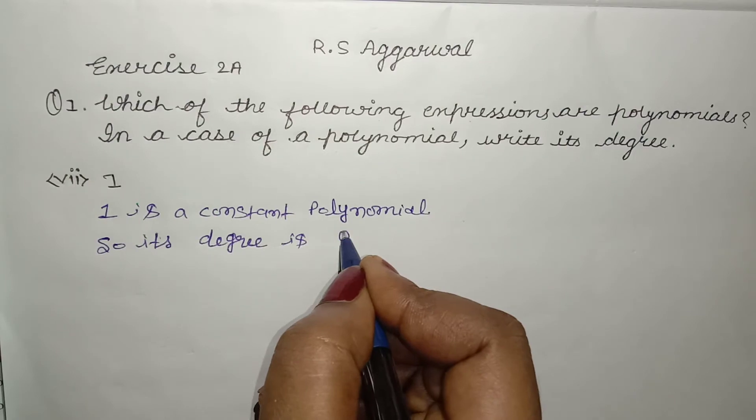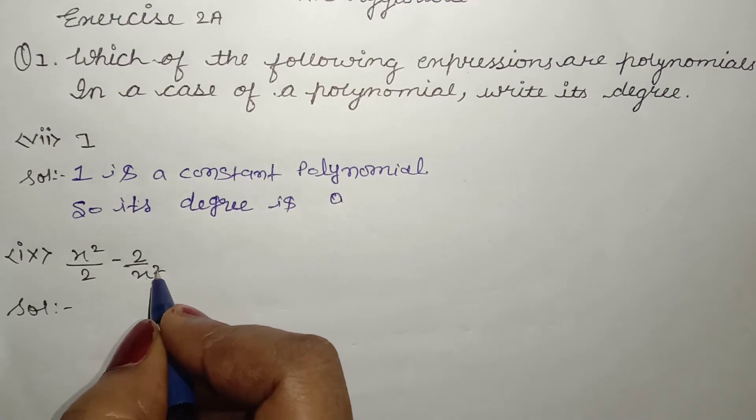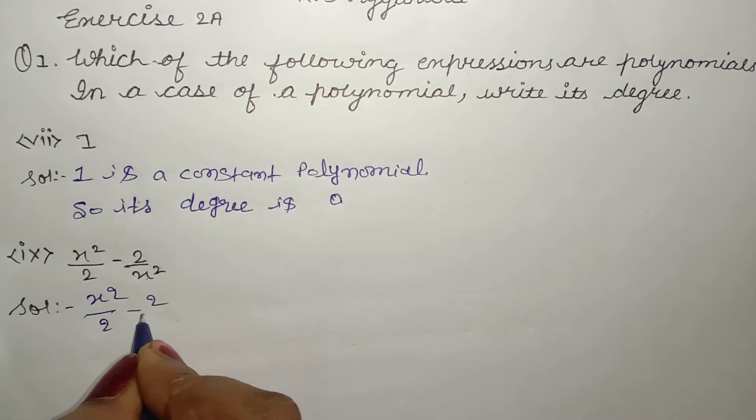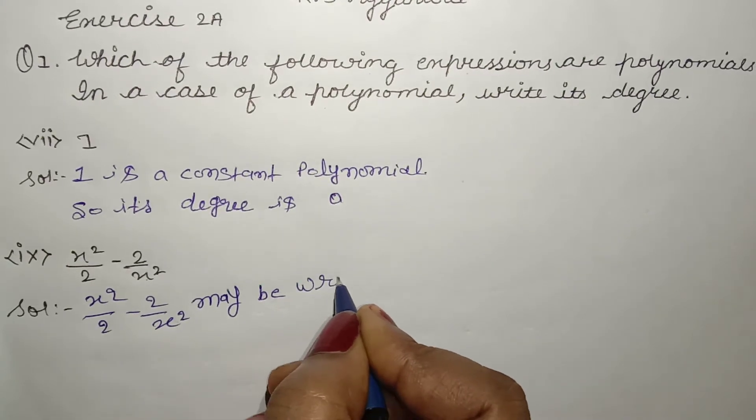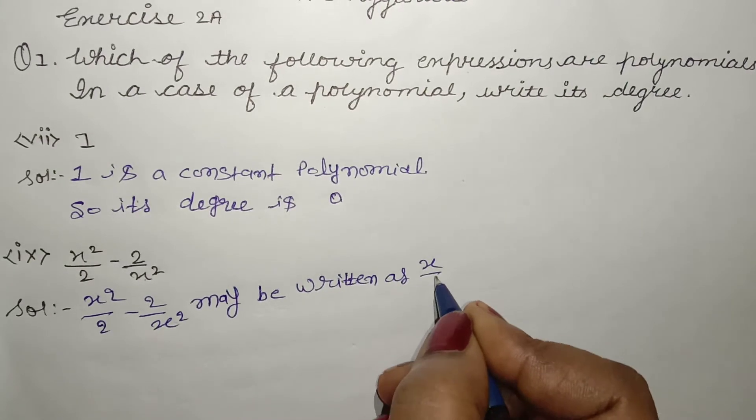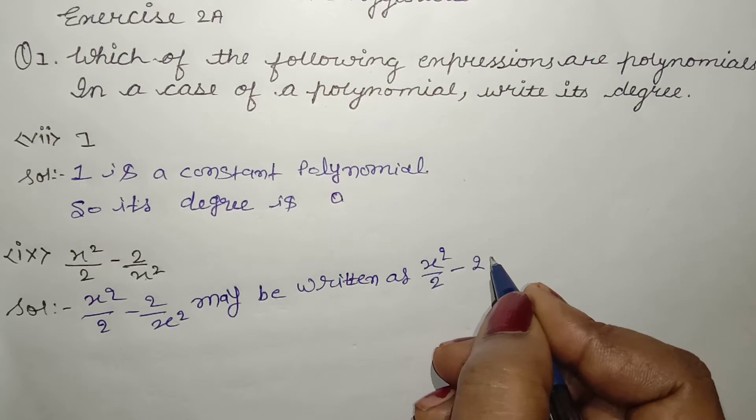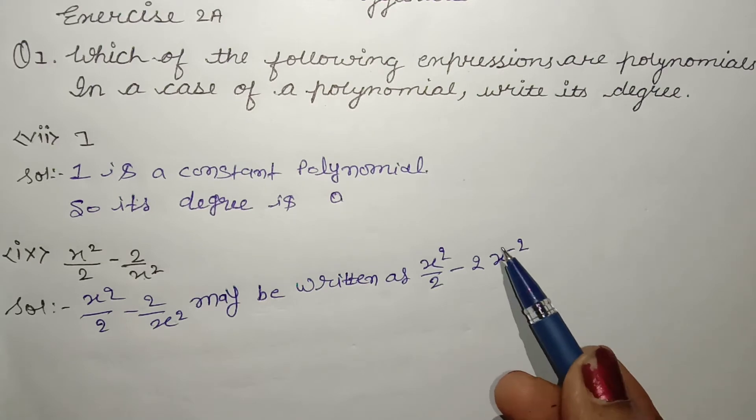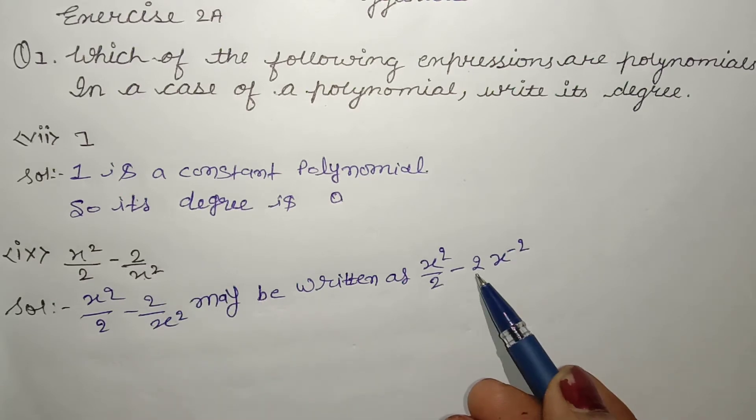Next, x squared by 2 minus 2 by x squared. This can be written as x squared by 2 minus 2, here we can get x squared by 2 minus 2 by x squared.